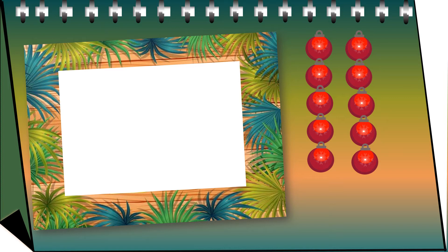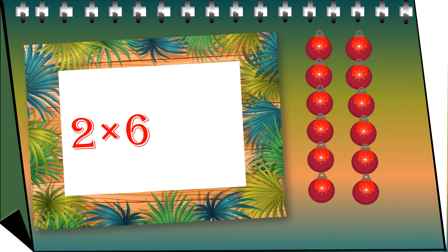Now you have ten balls with you, add two more to it. It makes twelve balls. That's correct — so two sixes are twelve. You added two six times to make twelve.